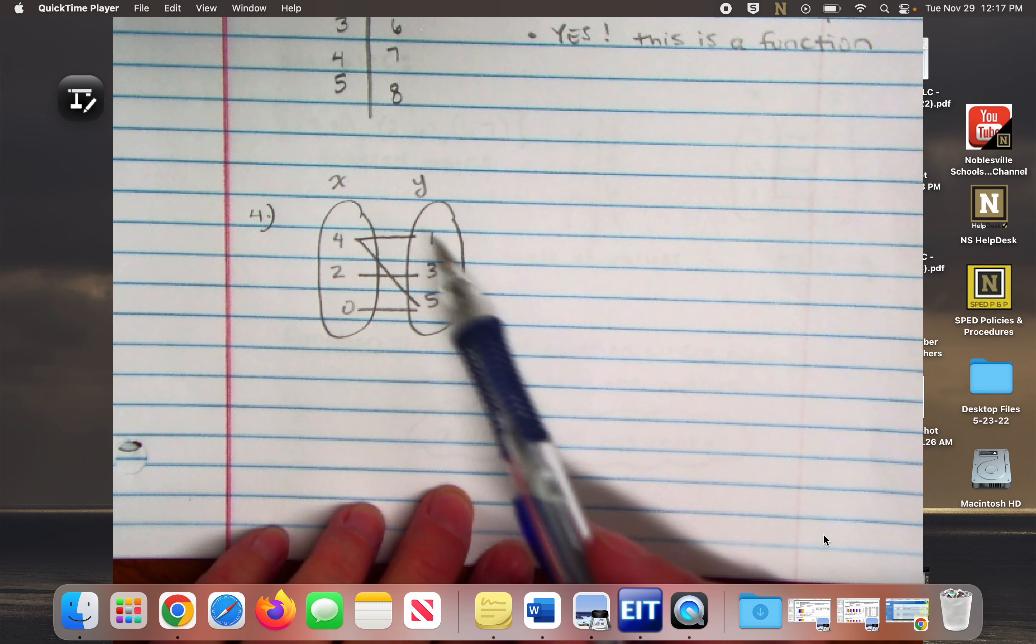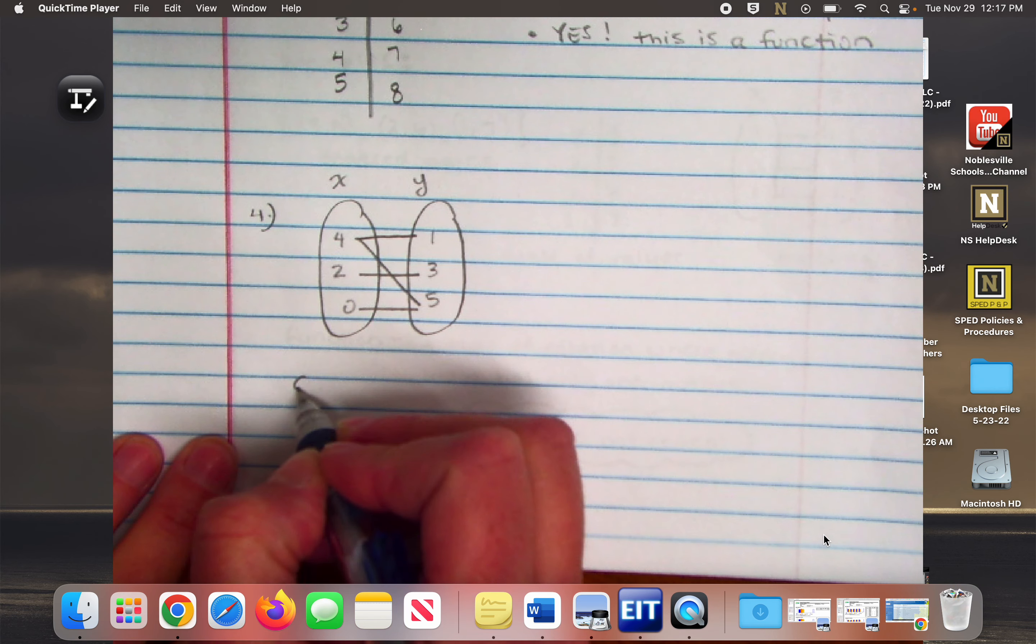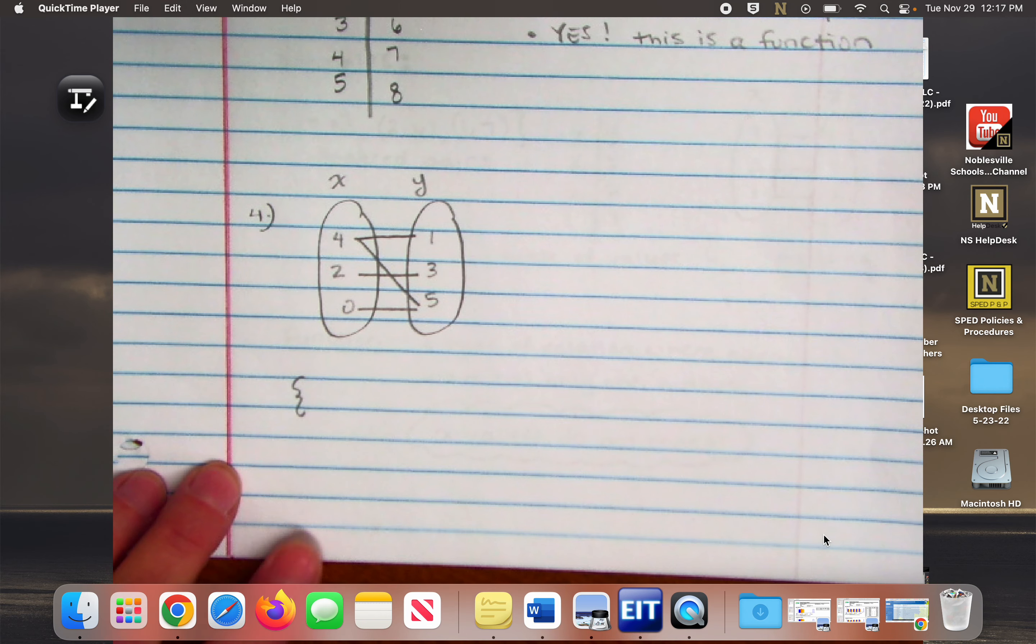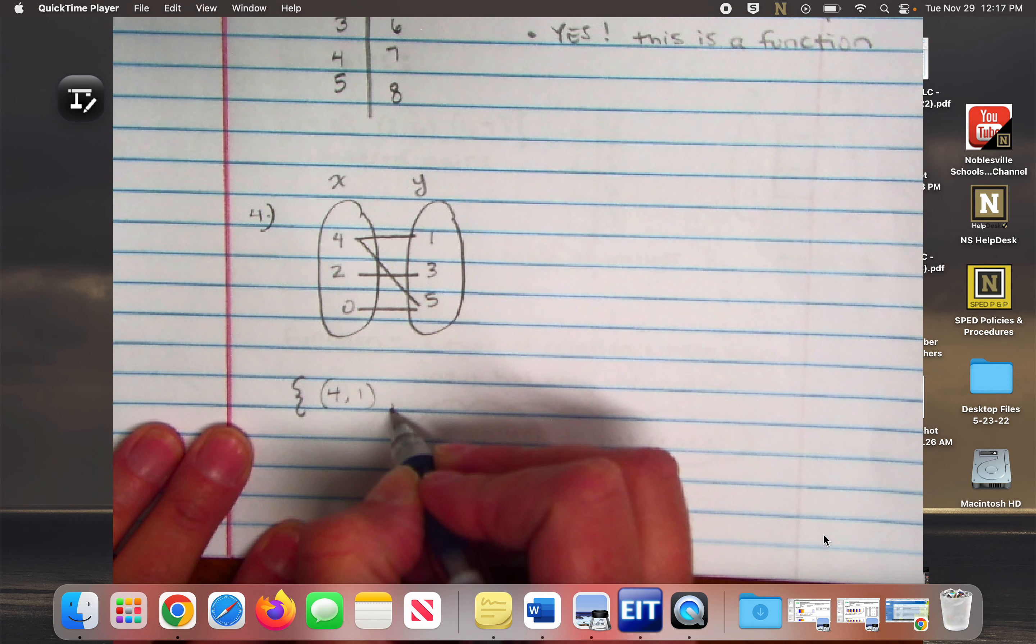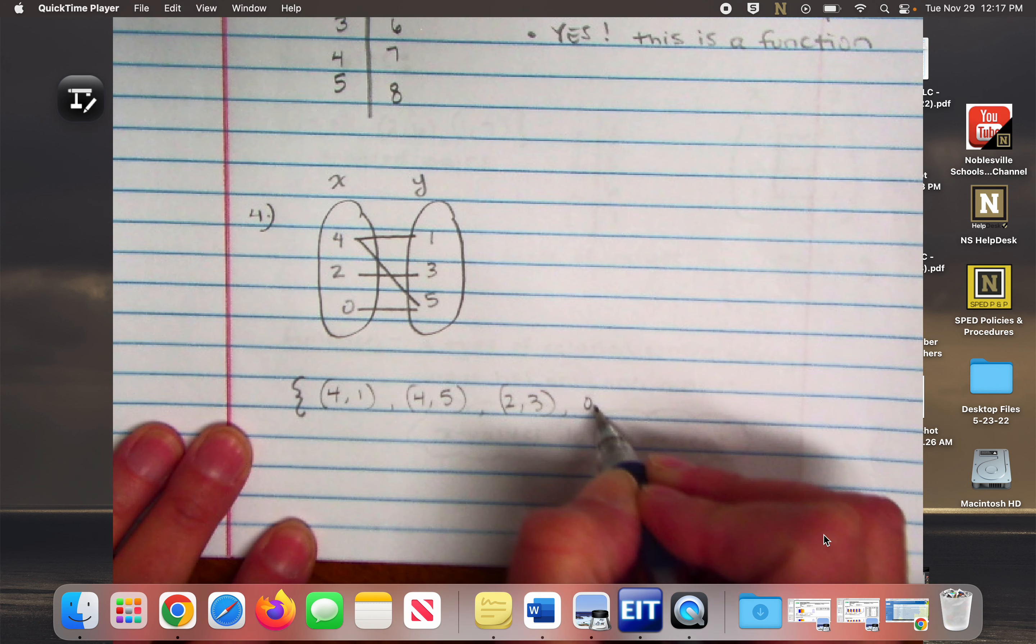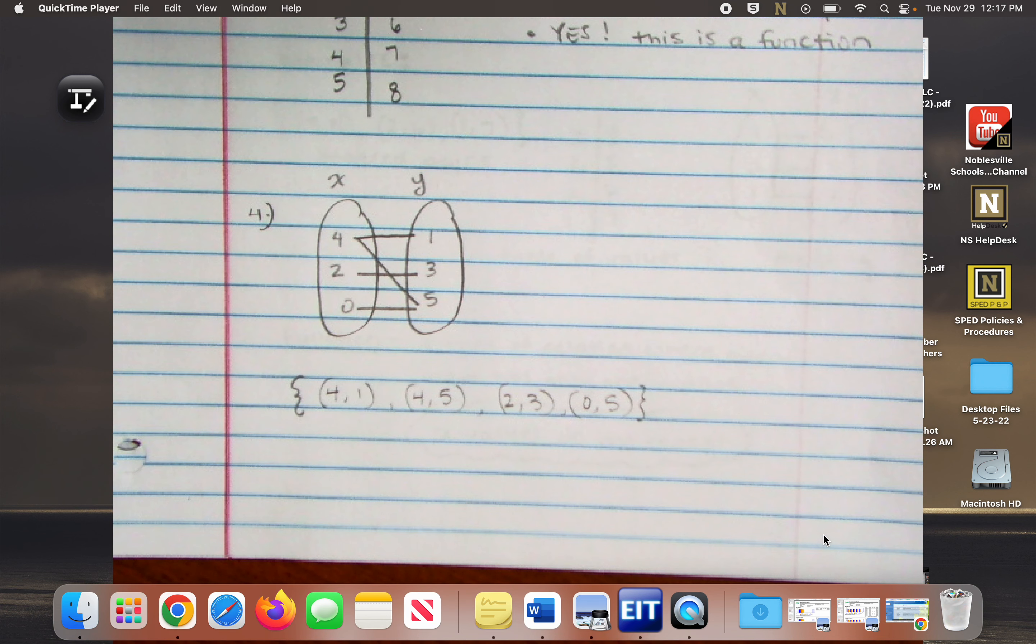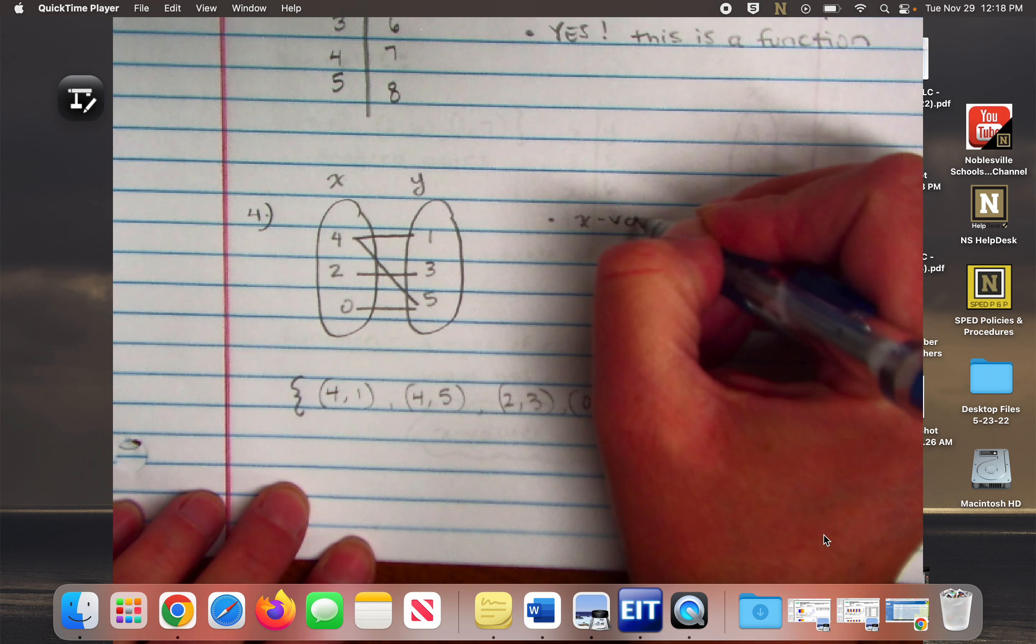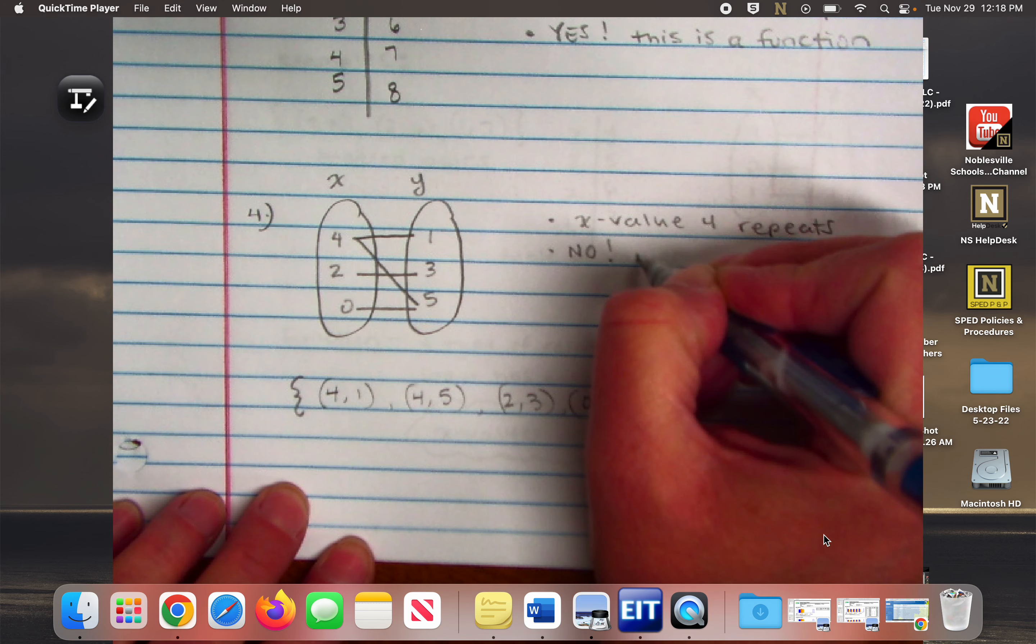So when I look at this mapping, if I can't tell right away whether or not this is a function, I'm going to go ahead and list the ordered pairs. So what are the ordered pairs from this mapping relation? What are the X's that are connected to the Y's? So when I look at it as ordered pairs, I can see right away that this is not a function. Why is this not a function? The X value 4 repeats. So nope, not a function.